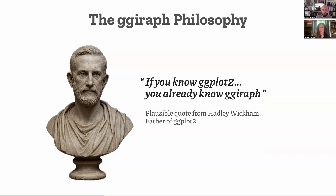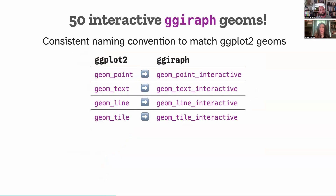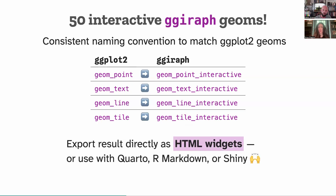If you know ggplot2, you already know Giraffe — this is going to be a cakewalk. There are actually 50 interactive geoms you can use with the package. Just to give you an idea of how easy and familiar it looks, here's a one-to-one conversion: all you're really doing is adding underscore interactive to create an interactive layer. On top of that, you can either use it as a standalone HTML widget, or embed it in Quarto — just like the slide deck we're presenting today — or R Markdown, or even Shiny.